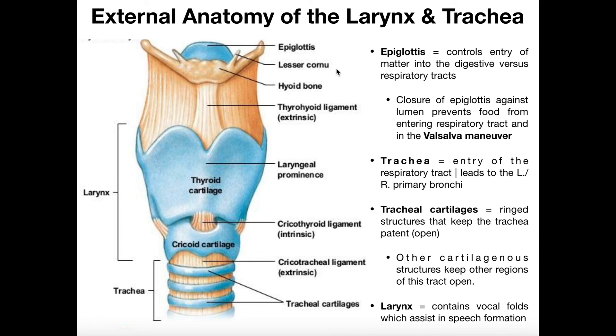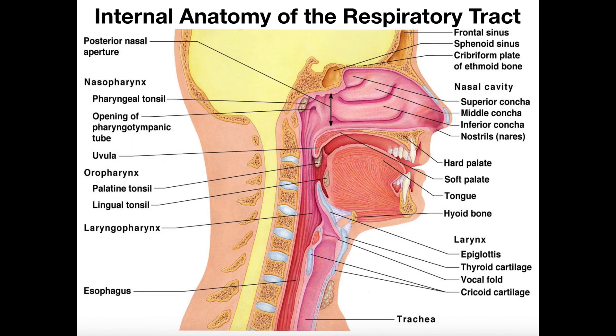This is the external anatomy of the larynx and trachea. Hopefully this video gave you a good understanding of the internal and external anatomy of the upper respiratory tract. In the next video, we're going to discuss the lower respiratory tract — the lungs — and see how we can go from the trachea to increasing the surface area a million times over. Please make sure to like this video and subscribe to my channel for future videos and notifications. Thank you.